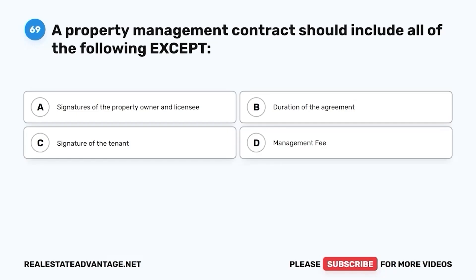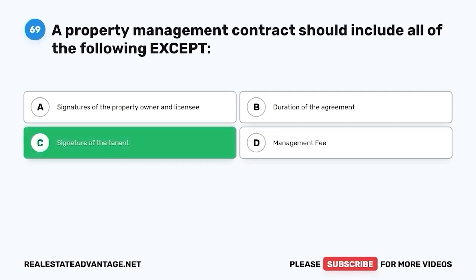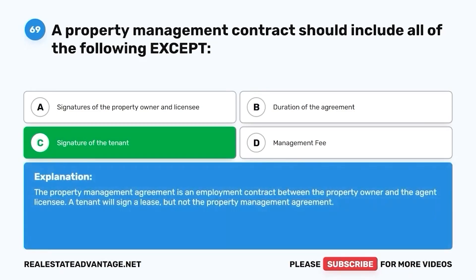Question 69. A property management contract should include all of the following, except: A. Signatures of the property owner and licensee. B. Duration of the agreement. C. Signature of the tenant. D. Management fee. The correct answer is C. Signature of the tenant. The property management agreement is an employment contract between the property owner and the agent/licensee. A tenant will sign a lease, but not the property management agreement.